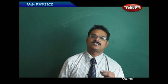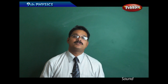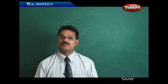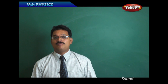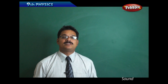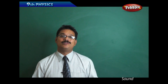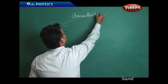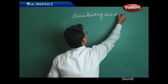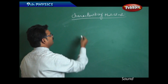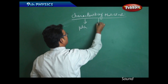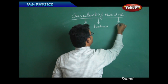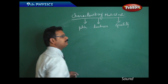We understand the different characteristics of sounds. We are very much interested to produce sound using musical instruments — we feel very happy listening to songs with musical instruments. To know more about musical instruments and their production of sound, we should know the characteristics of musical notes. Basically, there are three types: one is pitch, the second one is loudness, and the third one is quality.